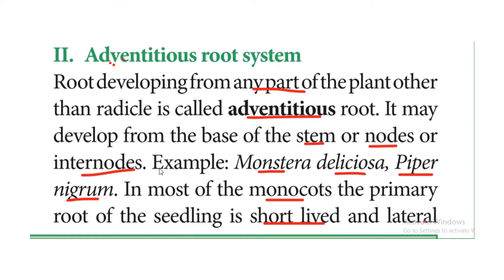For example, in Monstera deliciosa, adventitious roots are present. Another example is Piper nigrum — black pepper — where roots form from the nodal region of the plant. These are types of adventitious roots.